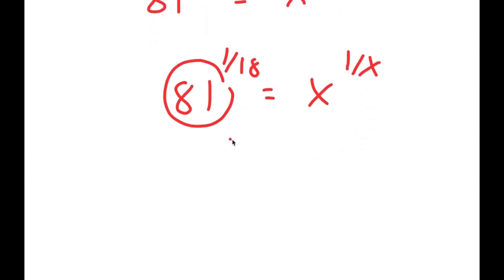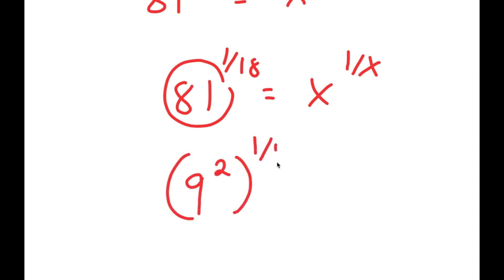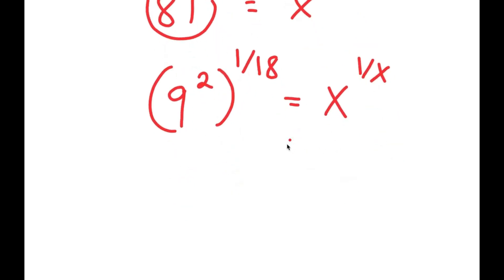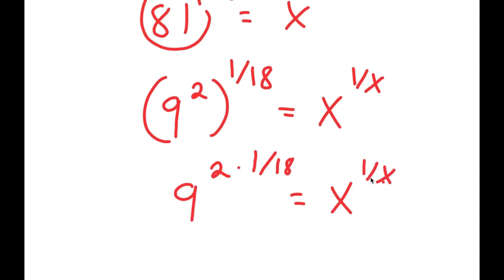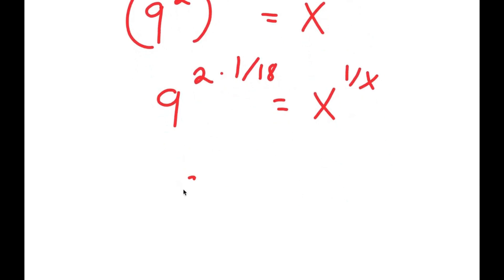Now, 81 is the same thing as 9 squared. So I rewrite this as 9 squared to the power of 1 over 18, which equals x to the power of 1 over x. This simplifies to 9 to the power of 2 times 1 over 18, and 2 times 1 over 18 is 1 over 9. So I get 9 to the power of 1 over 9 is equal to x to the power of 1 over x.